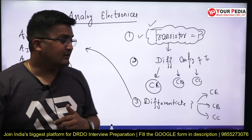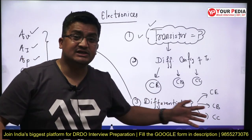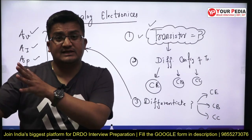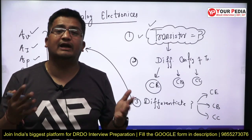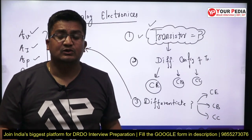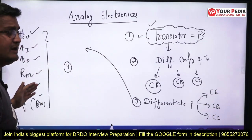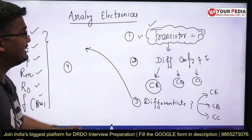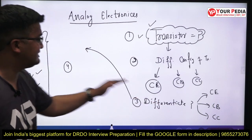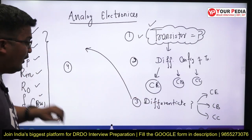Whenever we need to decide which configuration is best for a project or process, we must know what our requirement is in that project. So you decide on the basis of these parameters. You can see how they started from the basics, went through configurations, differentiation, and then reached the selection question — this is the connected progression of the interview.